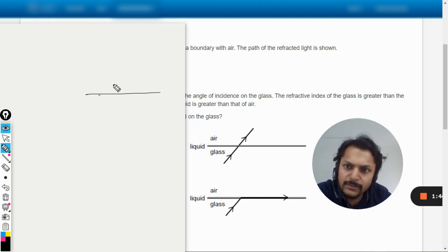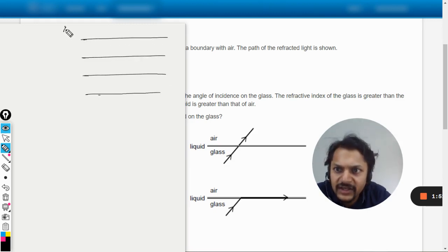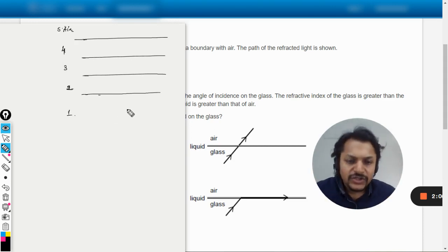This is medium one, this is medium two, and this is medium three, and the other is medium four. Let us say this is air at the end. So this is medium one, medium two will be this, three will be this, four will be this, and five will be this. There are five different mediums that we are now dealing with.